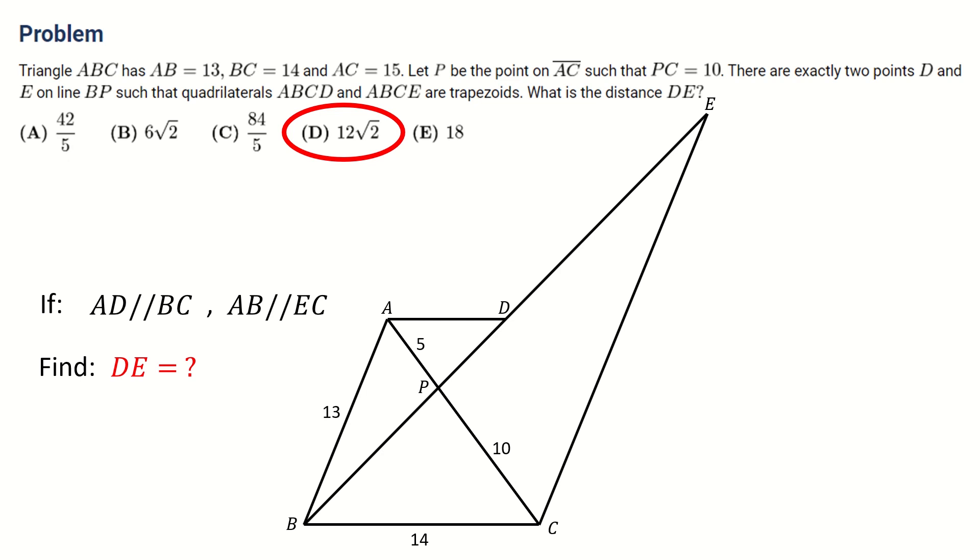For this problem, it involves two keys. The first is to use the property of similarity for triangles to set up the relation between PE and BP, and also for the relation between PD and BP. The second key is to use the cosine law to solve BP. Here we apply the cosine law twice. Once we find BP, this problem is solved.